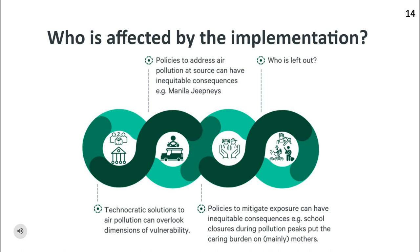Policies to address air pollution at source can have inequitable consequences, such as with diesel fuel jeepneys in the Philippines. A study found diesel jeepneys responsible for 15% of PM2.5 in Manila. The government planned to phase out jeepneys in Manila and replace them with vans, but the costs of running these are higher and would therefore be passed on to commuters through higher fares. The burden is thus predominantly on the poor.